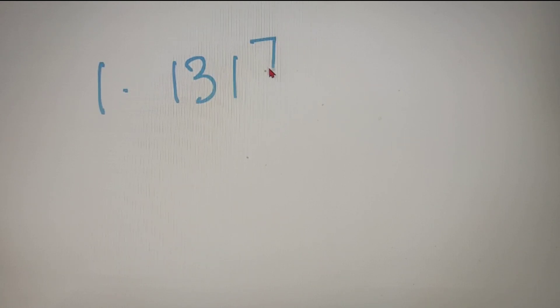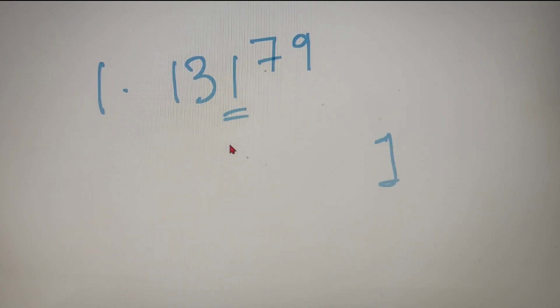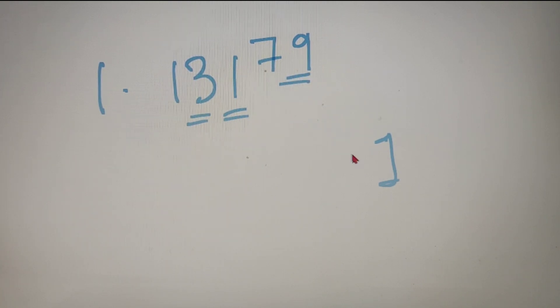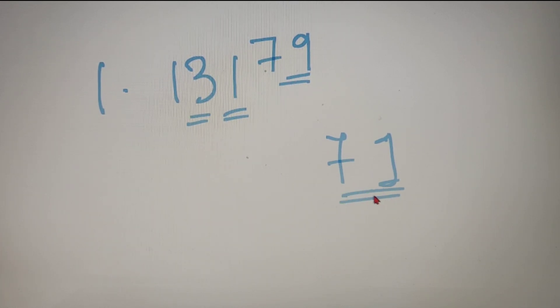For our first example, we have to find out the last two digits of 131 raised to the power 79. According to the formula, the last digit will be 1 and the second last digit will be the unit digit of 3 × 9. The unit digit of 3 × 9 is 7. So the last two digits of 131^79 is 71.